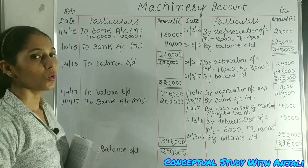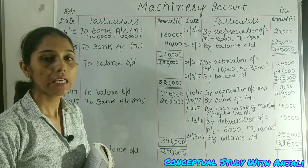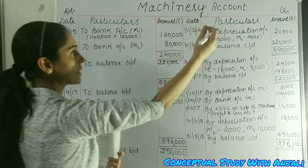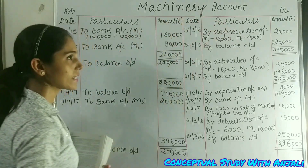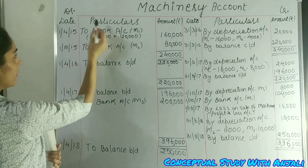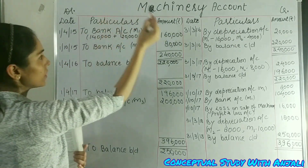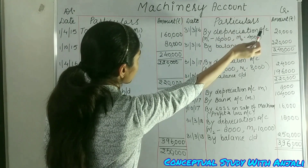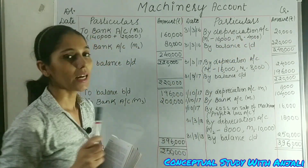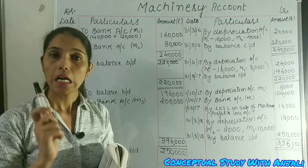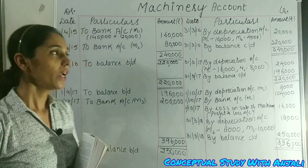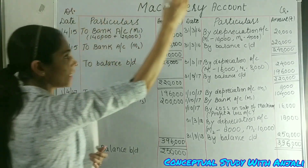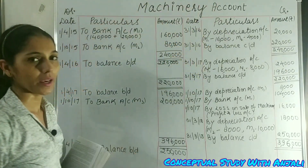Remember that the machinery account is just like any other account — left side is the debit side, right side is the credit side. First we write date, particulars, amount, then again date, particulars, amount. The machinery account is our asset account. If there is some increase, it will come on the debit side. If there is a decrease, it will come on the credit side.